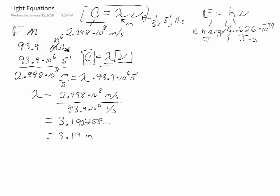Rearranging to solve for lambda, you get lambda equals the speed of light divided by the frequency, which gives 3.1927. Looking back at your original frequency, you only had 3 significant figures, so you can only keep 3 significant figures in your answer.